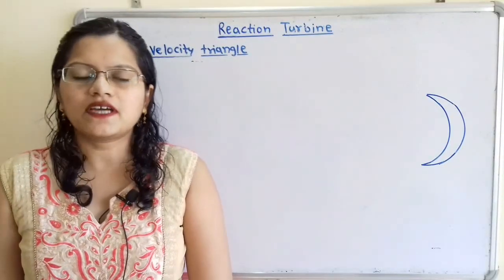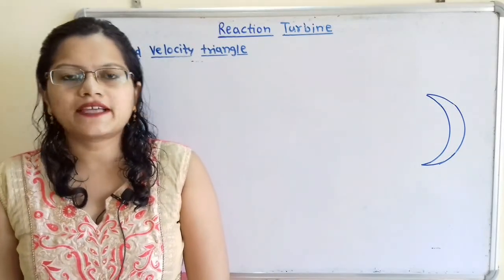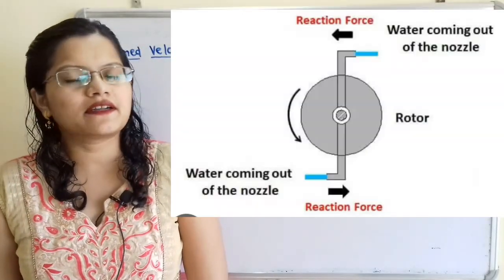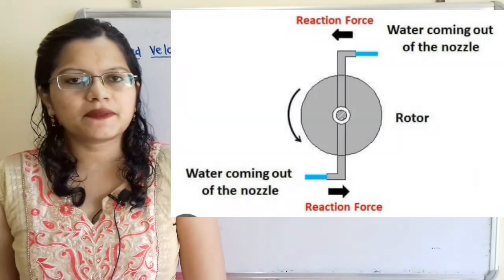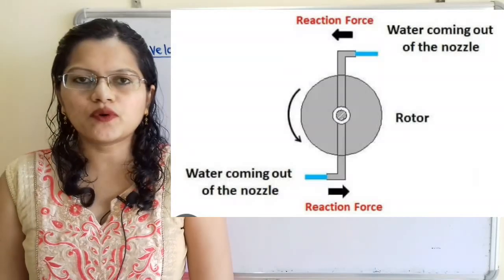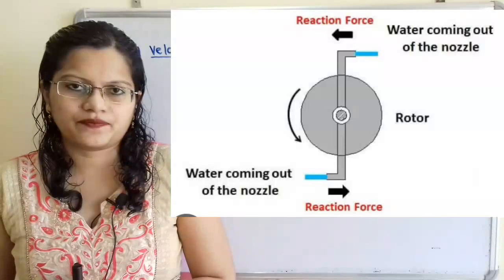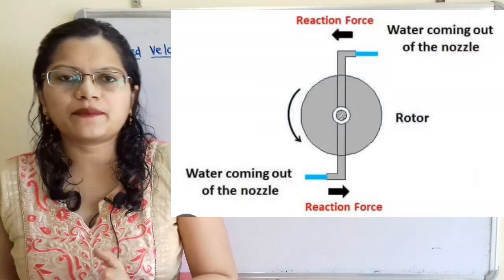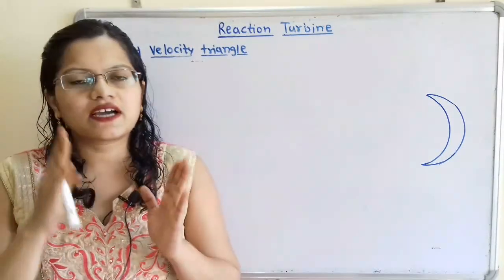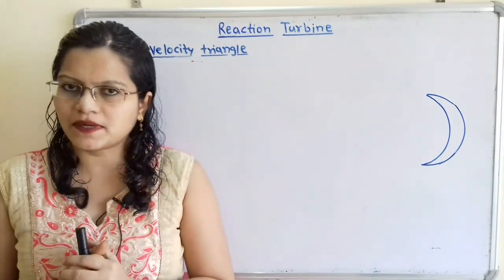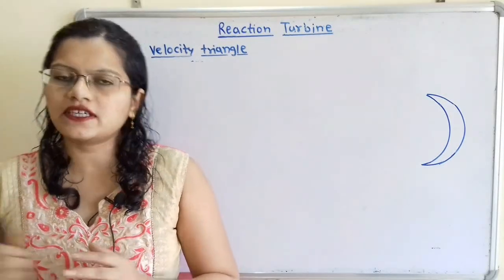Let us first understand the working of a reaction turbine. In a reaction turbine, steam enters under pressure, and this pressure makes the blade move when steam is gliding over the blade surface. There are two types of blades: the guide blade, also known as the fixed blade, and the moving blade, also known as the runner blade.